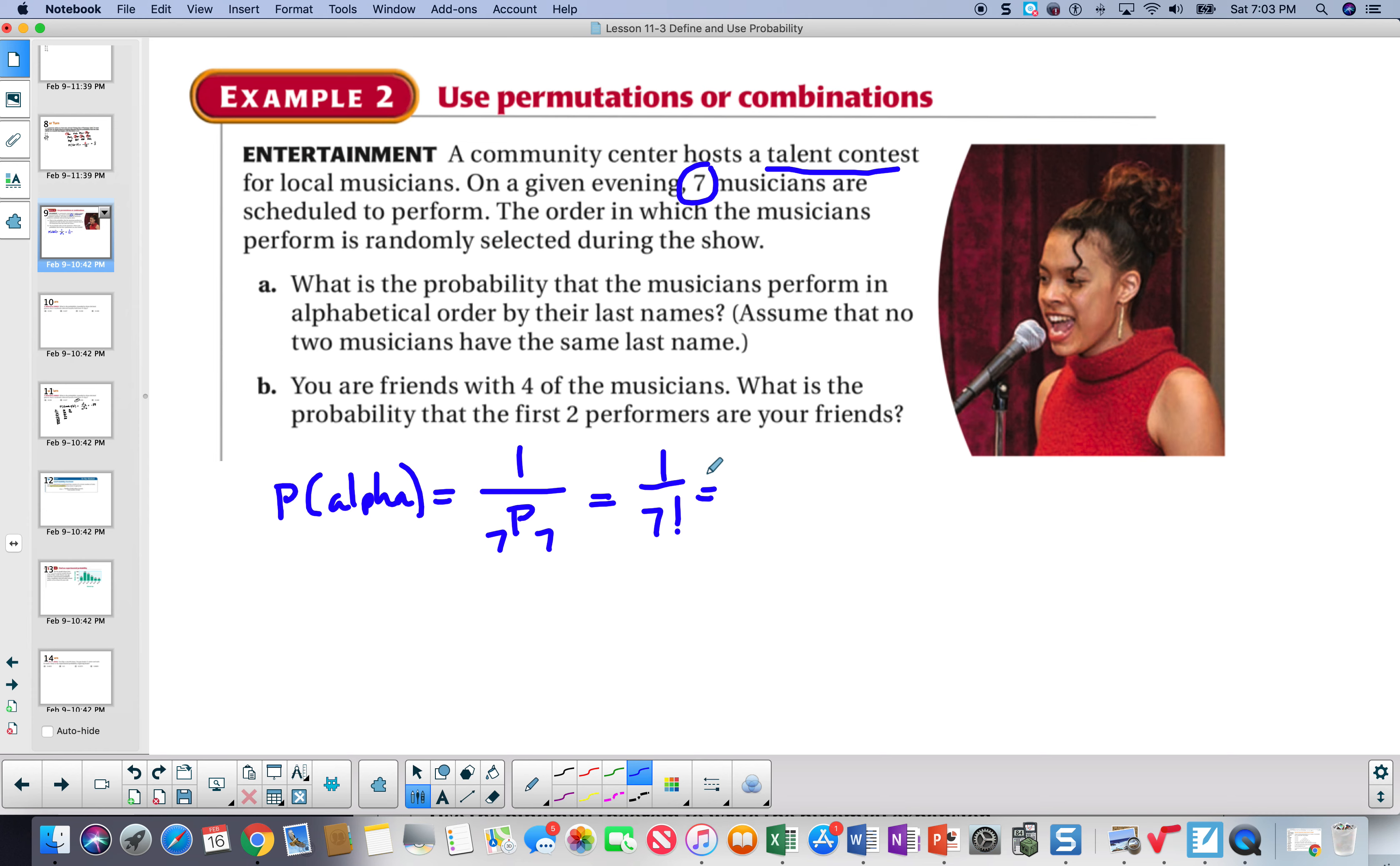Let's go ahead and put that in our calculator. 7 factorial. Go to math. And the answer is 1 over 5040.